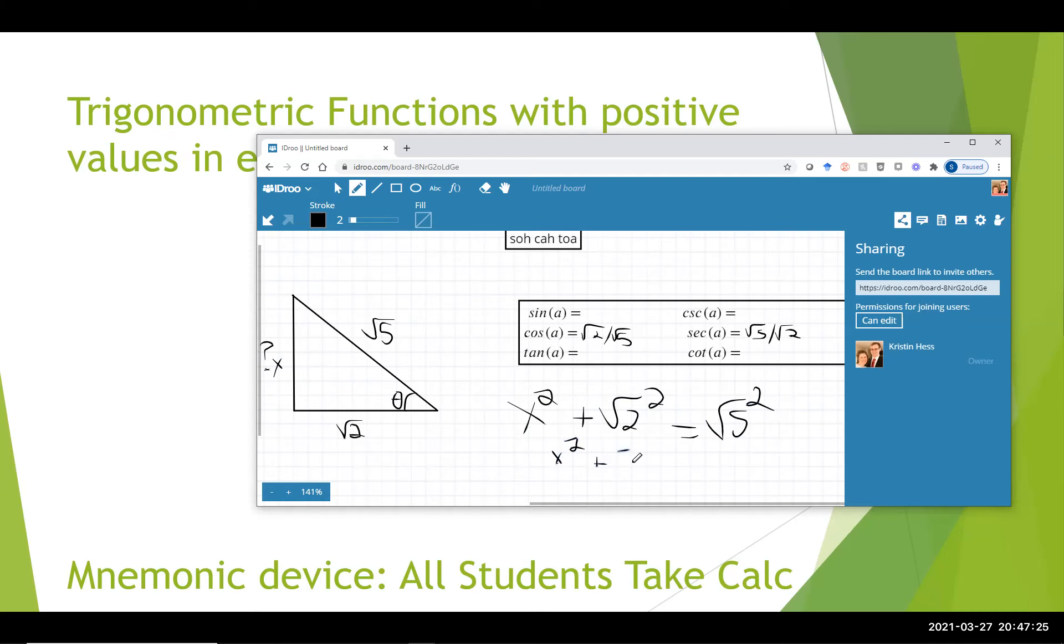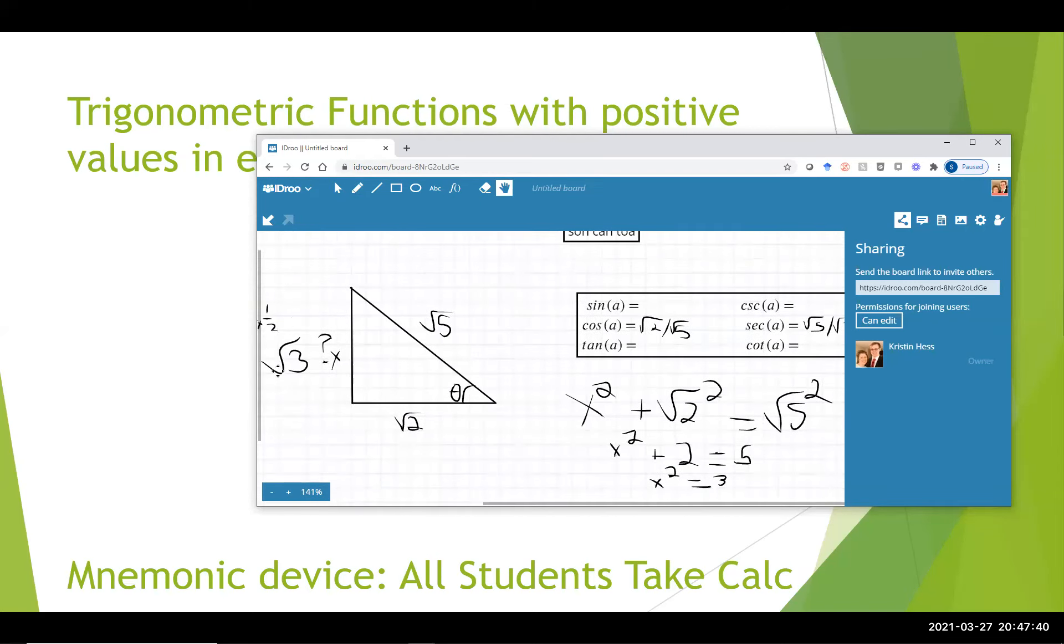So square root of 2 squared is 2, the square root of 5 squared is 5. Subtract 2 from both sides, you get x squared is equal to 3. Take the square root of that to get that x is the square root of 3.